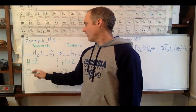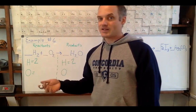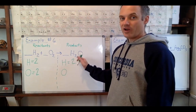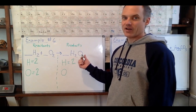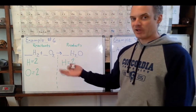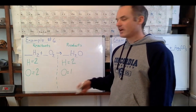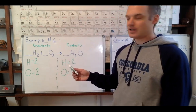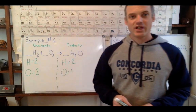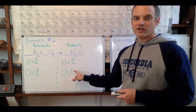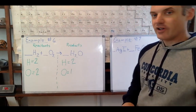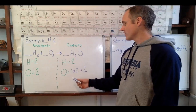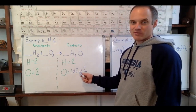Looking at oxygen on the reactant side: O₂ is a molecular element that bonds with itself, so we have 2 atoms of oxygen. On the product side, H₂O only has one oxygen — there's no subscript shown, so there's technically a 1 there. Oxygen is not balanced. To fix it, we need to double the oxygen on the product side, so we multiply it by 2: one oxygen times two gives us two.